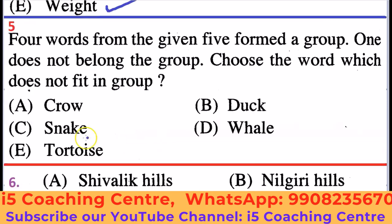Next: four words from the given five form a group, one does not belong — Crow, Duck, Snake, Whale, Tortoise. All except Whale lay eggs, while Whale is a mammal that gives birth to a baby. Therefore, Whale does not belong to the group. The correct answer is D.